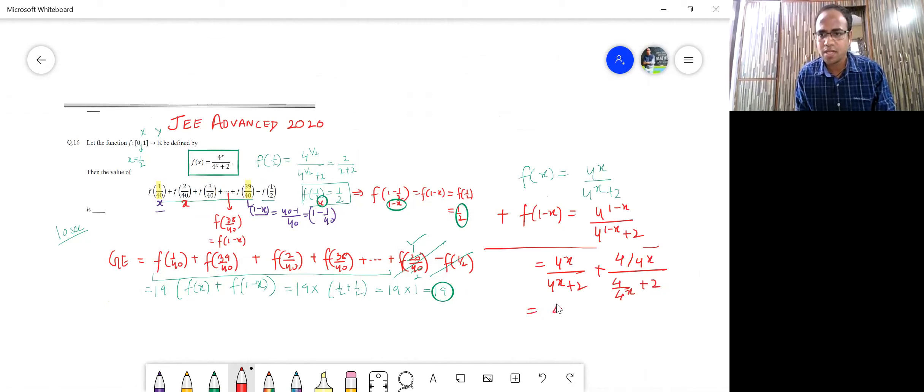Now after taking LCM, you can clearly see that, yes, you got it right, that 4 raised to x times 4 raised to x will cancel. And this will become 4 upon 4 plus 2 dot 4 raised to x. Now don't you think? Here, the 2 will be taken out common. This will be 2 and this will be 2. So upper numerator will be also 4 raised to x plus 2. And the below part is also what? 4 raised to x plus 2. Both will cancel. And this will come out to be 1.